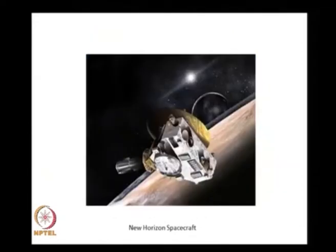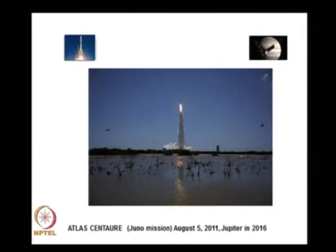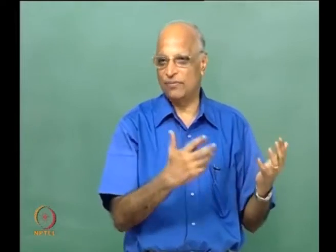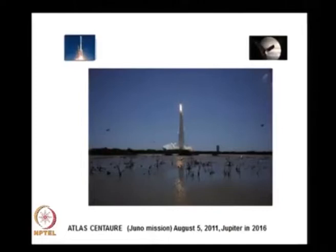It consists of a series of rockets one above the other. The purpose of this course is that at the end we should be able to size up a rocket and put things in a rocket such that we can achieve a specific mission. The next slide shows a launch which took place on August 5, 2011 — an Atlas Centaur rocket from the US — which has something known as a Juno mission, supposed to go and look at Jupiter.